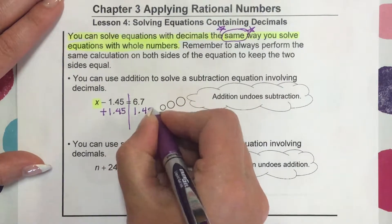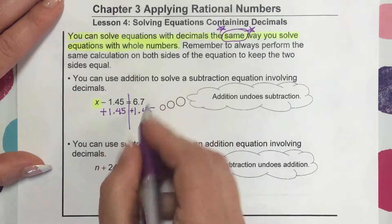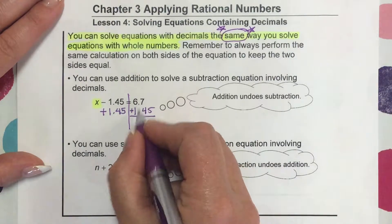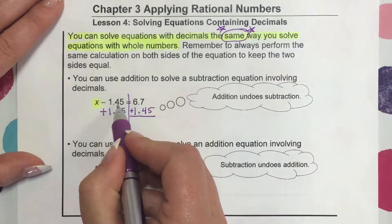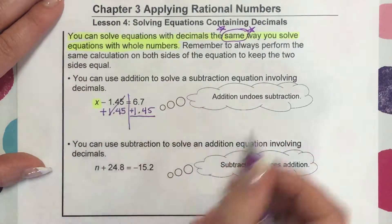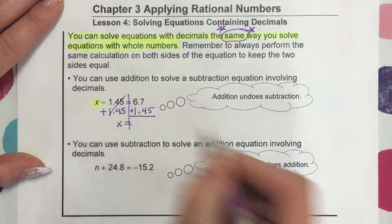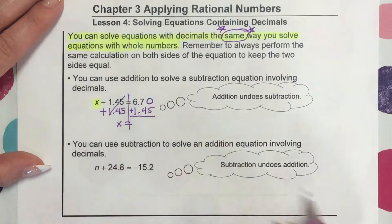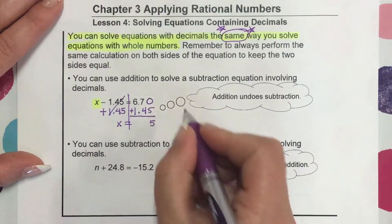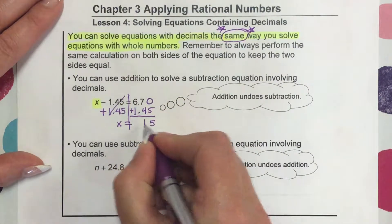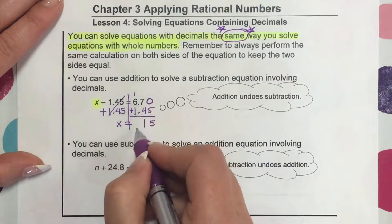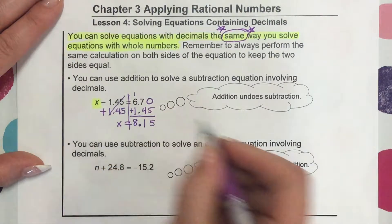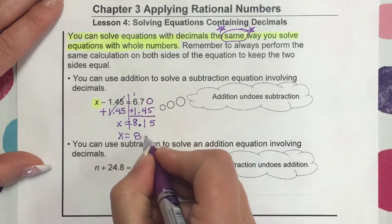When adding decimals, you have to make sure that the decimal signs line up. A negative 1.45 and a positive 1.45 are going to cancel out, leaving us with x on this side. There's no place value for the ones digit on 6.7, so we add a 0 there. 0 plus 5 is 5. 7 plus 4 is 11 — write the 1, carry the 1. The decimal goes straight down. 1 plus 6 is 7, plus the other 1 is 8. So x equals 8.15.